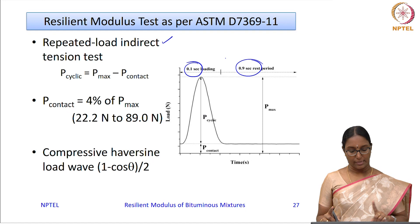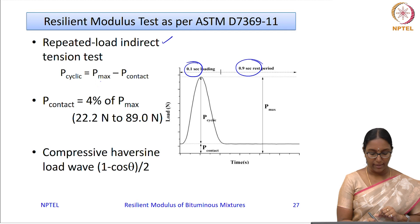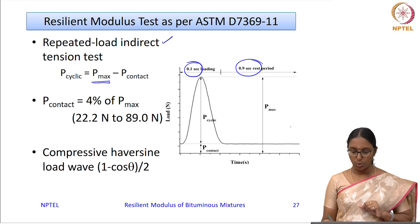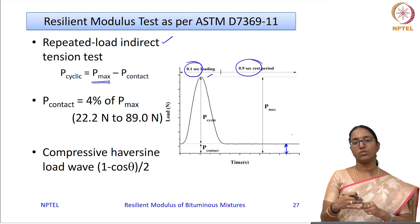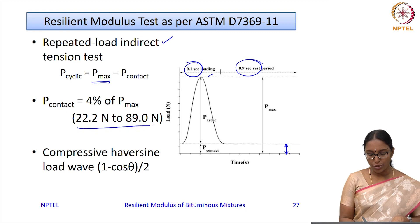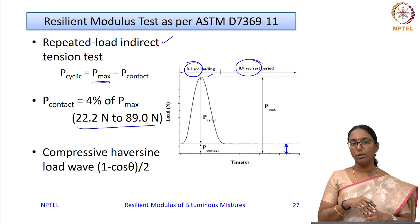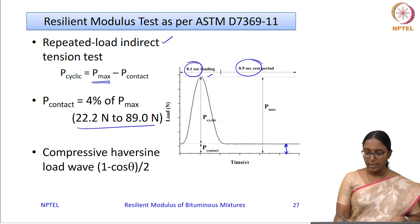The total load is P max, and there should always be a certain contact load — for example, 4 percent of the total load — so that the specimen and the loading strip will not lose contact. It is specified that there should be at least 22.2 Newton of contact load and it should not exceed 89 Newton.